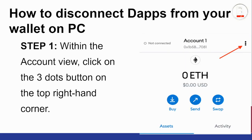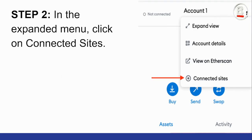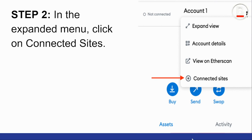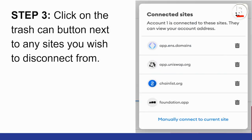To disconnect on PC, go to your dashboard and tap the three dotted lines at the top right. Scroll down to Connected Sites and tap it. A list of connected sites will appear. Tap the bin/delete icon next to any site you want to disconnect from. If that site is connected to more than one MetaMask account, it will ask if you want to disconnect from all accounts or just from that particular wallet.